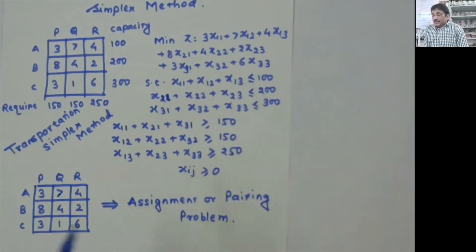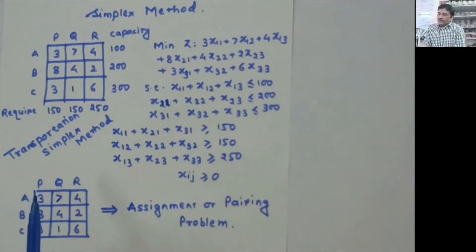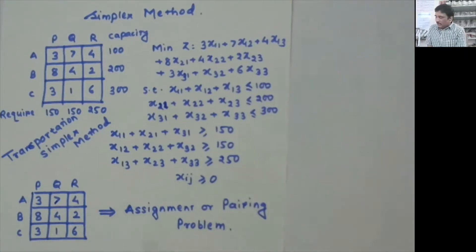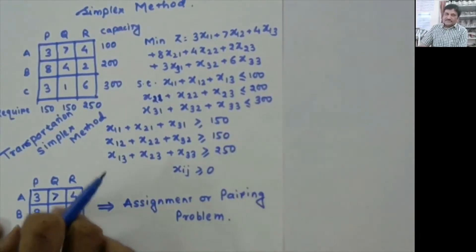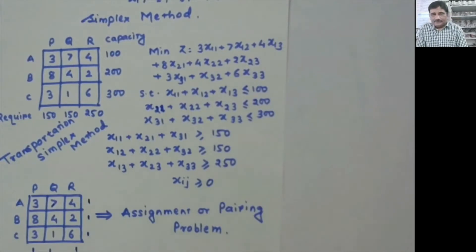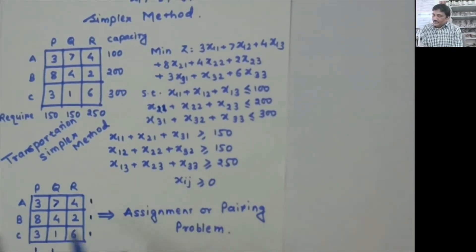This is an assignment problem. I can put it in the framework of a transportation problem by adding capacity 1 for each source (A, B, C) and requirement 1 for each destination (P, Q, R). This becomes a balanced transportation problem. I can then solve it using the transportation simplex method with initial allocations by Northwest corner rule, least cost method, or Vogel's approximation method, and optimize using the MODI method or stepping stone method.